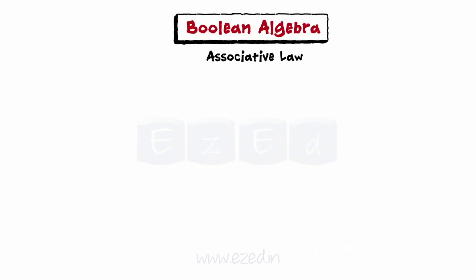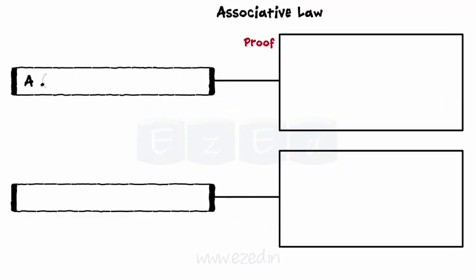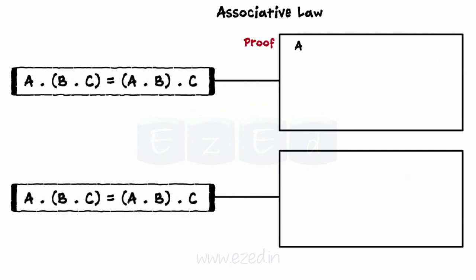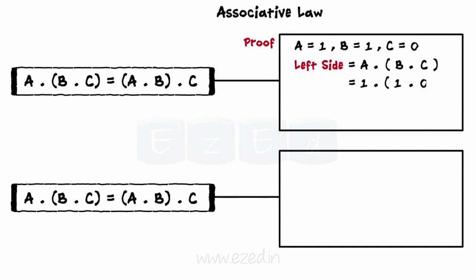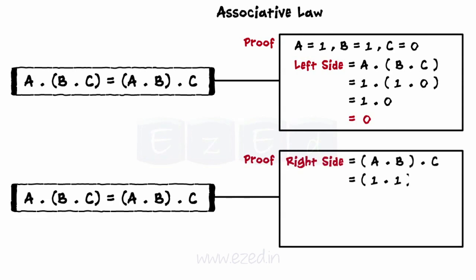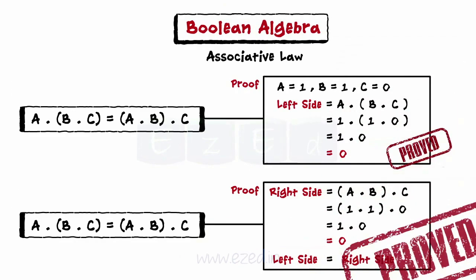The second associative law is (a dot b) dot c equals a dot (b dot c). Assume a equals 1, b equals 1, and c equals 0. Left-hand side equals 1 dot 1 dot 0 equals 1 dot 0 equals 0. Right-hand side equals 1 dot 1 dot 0 equals 0 again. As left-hand side equals right-hand side, the law is hence proved.